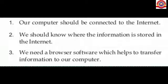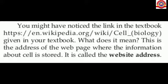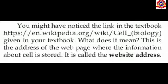To recap, the three prerequisites for gathering information are: our computer must have an internet connection; we should know where the information is stored on the internet; and we need browser software to transfer information to our computer. You might have noticed links like https://en.wikipedia.org/wiki/cell_biology in your textbook. This is the address of the web page where the information is stored, called the website address.